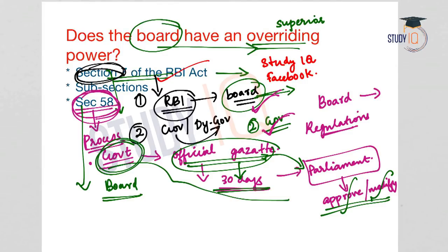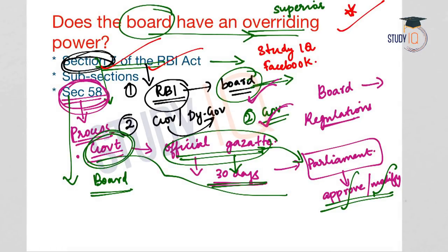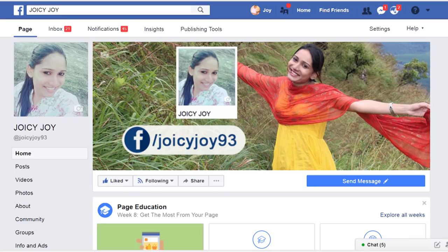The Central Board of Directors is a very important current affairs topic. You should know the roles and functions of the Central Board, Section 7 of the RBI Act, and the ongoing tussle between the government and the RBI. You can find the PDF of this lecture on my Facebook page, and for any queries related to UPSC preparation, you can get in touch with me there. Thank you and I wish you all a very good day.